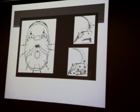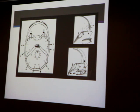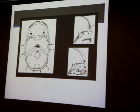The foramen magnum moves down and gets bigger because of the resorption around it. The nerve foramina stay at the same position relative to the brain as it grows around them — the cranial base adapts to keep the nerves in the same place.